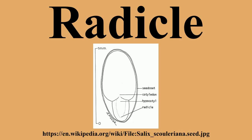If the radicle begins to decay, the seedling undergoes pre-emergence damping off. This disease appears on the radicle as darkened spots. Eventually, it causes death of the seedling.